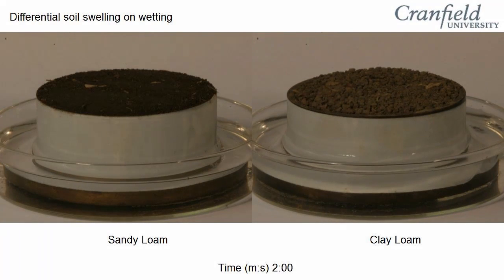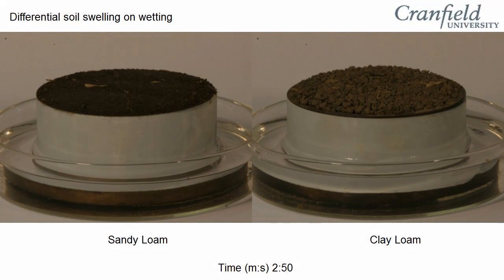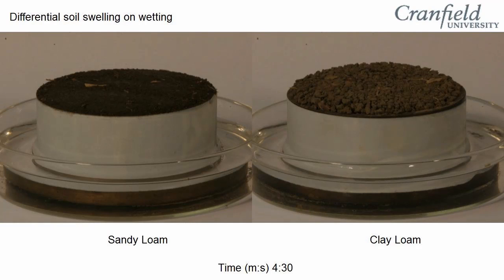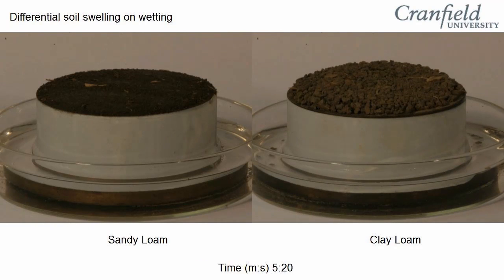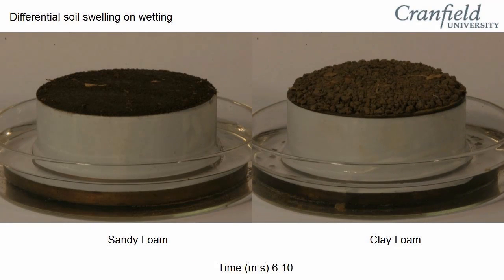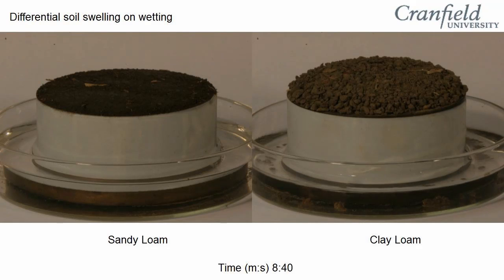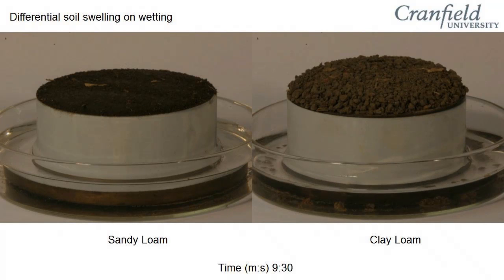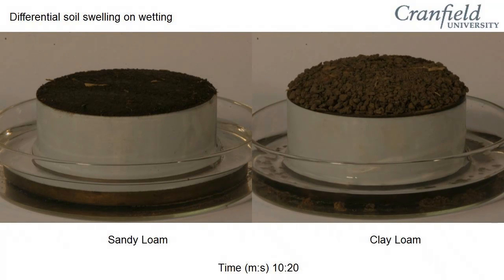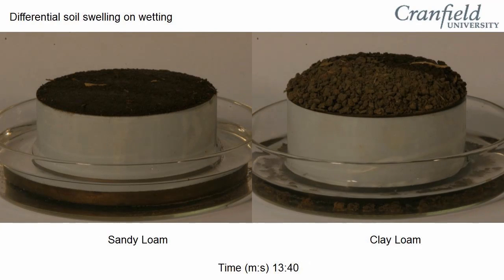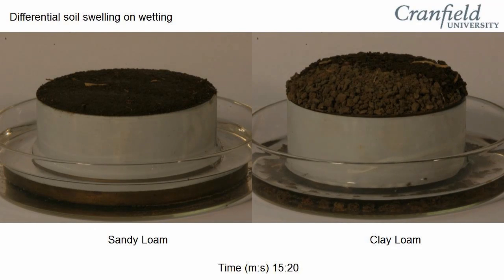Wetting the soils causes them to expand. The sandy loam actually expands by 2% because it contains a small amount of clay. The clay loam expands by 30% of its original volume — a bulk density change from 1.2 to 1 g per cm³ in just 20 minutes.